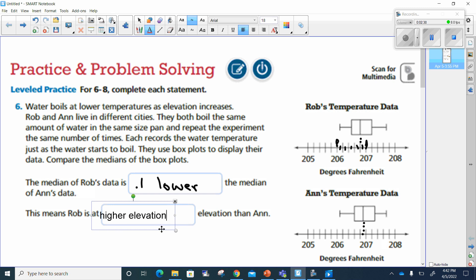Okay, so Rob is at a higher elevation. Okay, and I really should have remembered to put Fahrenheit here. I do want to get in the practice of labeling everything correctly. So this would be Fahrenheit, degrees Fahrenheit. Okay, so 0.1 degrees Fahrenheit lower than the median of Ann's.